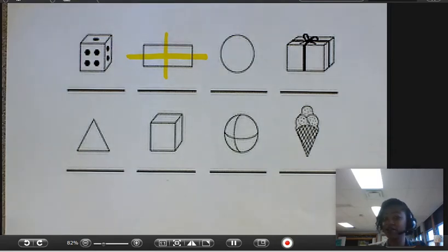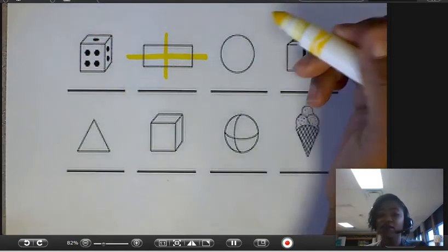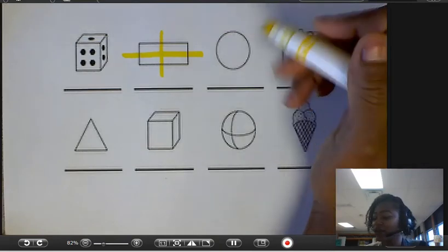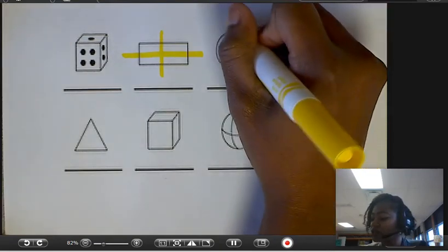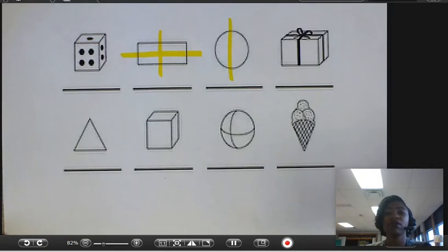All right. Let's check it out, fourth graders. I know how smart fourth graders are, and I know that you chose to draw a vertical line showing a line of symmetry there.